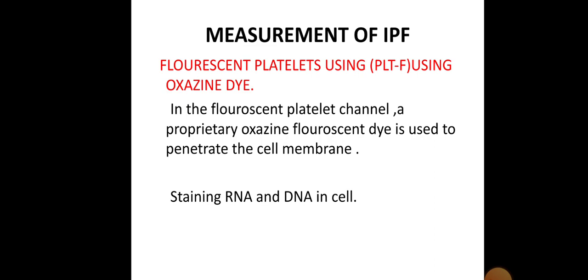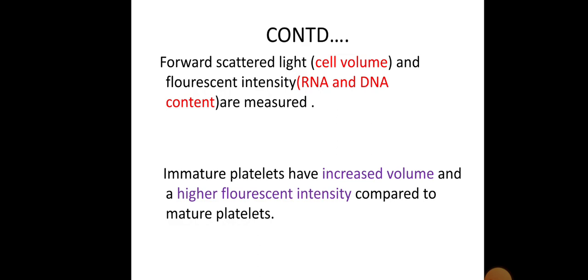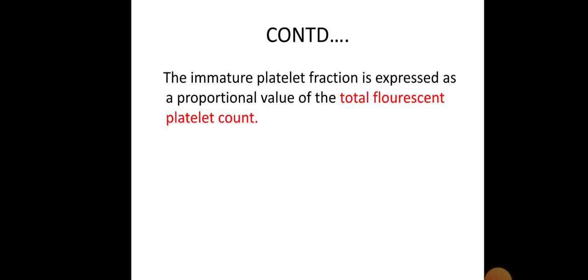Coming to how we measure the immature platelet fraction: IPF can be measured by fluorescence using an oxazine dye in the fluorescent platelet channel. A proprietary oxazine fluorescent dye is used to penetrate the cell membrane and stain the DNA of the cell. We measure forward scatter light and fluorescence intensity, where forward scatter light measures cell volume and fluorescence intensity measures the RNA and DNA content of the cell. Immature platelets have an increased volume and higher fluorescence intensity compared to mature platelets. The immature platelet fraction is expressed as a proportional value of the total platelet count.